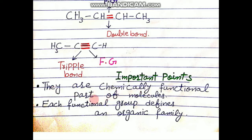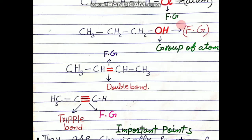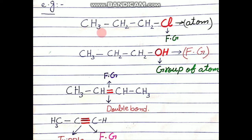Important point: functional groups are the chemically functional part of molecules. Jis tarah insan ka gene functional part of body hota hai, isi tarah yeh functional groups hote hain — yeh functional part of molecules hote hain. For example, chlorine decides how the compound participates in reactions and what its behavior is with solvents. Similarly, the hydroxyl group decides — it is the functional part and functional group of that compound.